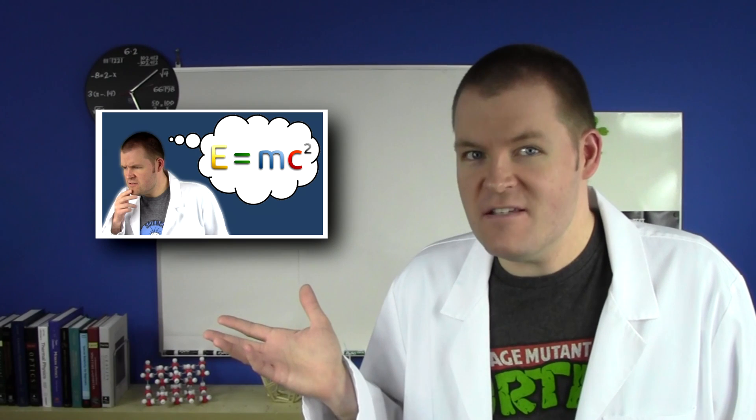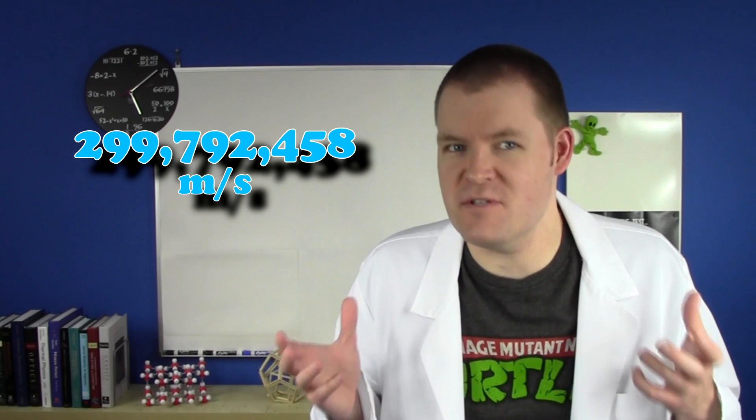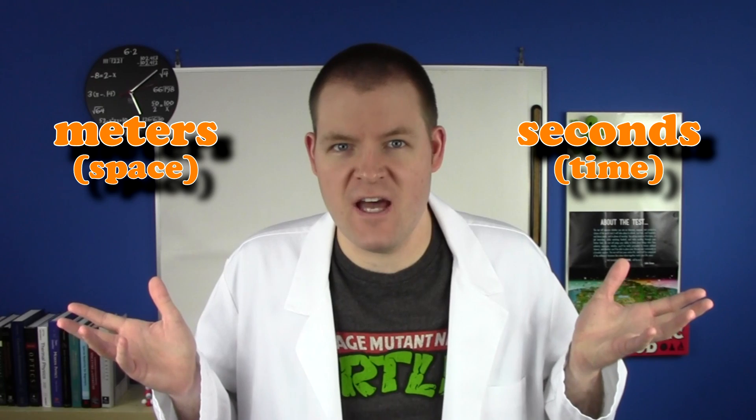Secondly, in my E equals MC squared video, I mentioned the speed of light really isn't all that special. But you said it's the same for everything everywhere at any time. Yeah, but it's not the only thing like that. The point is, it's just a number, about 300 million meters per second, but that's only when you use standard units, meters for space and seconds for time.